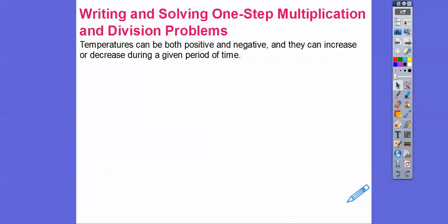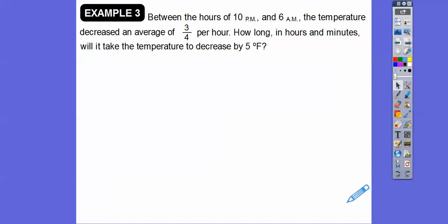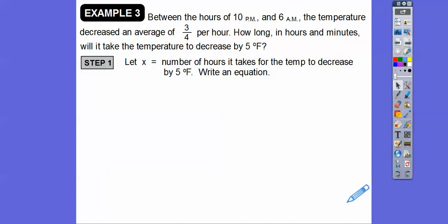Okay. So temperatures can be both positive and negative, and they can increase or decrease during a given time period. A decrease in temperature is represented by a negative number, and of course an increase is represented by a positive number. So here's an example. So between the hours of 10 p.m., so that's nighttime, and 6 a.m., the temperature decreased an average of three-fourths per hour. So per usually means multiply, so three-fourths times each hour. So how long in hours and minutes will it take the temperature to decrease by five degrees Fahrenheit? Okay, so let's let x equal the number of hours that takes the temperature to decrease by five degrees, and then write an equation. Okay, so remember per means basically time. So negative three-fourths, because it's decreasing, negative three-fourths x will get us to a temperature to negative five, because it decreased by five degrees.